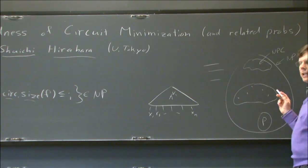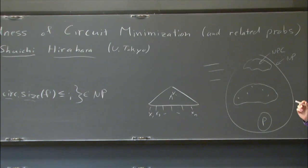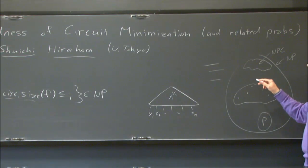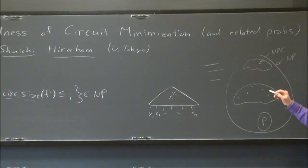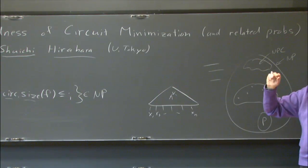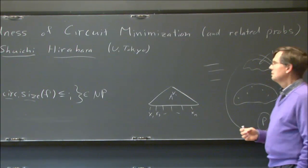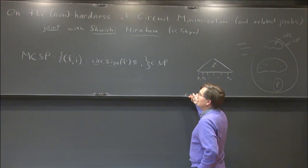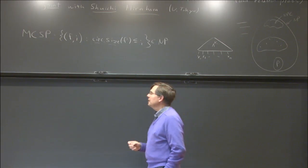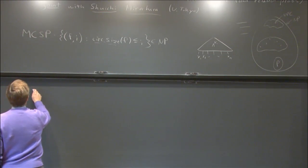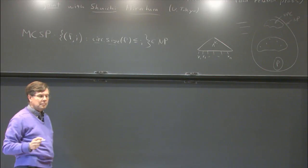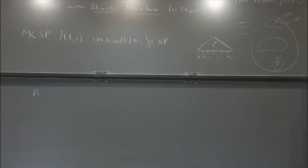So that's what the problem is — or what the problems are, because there are different versions of it. One theorem that we have that I'm going to be presenting is showing that under a very modest assumption, a problem related to circuit minimization really is NP-intermediate. So instead of just feeling that, it'll actually be a theorem.